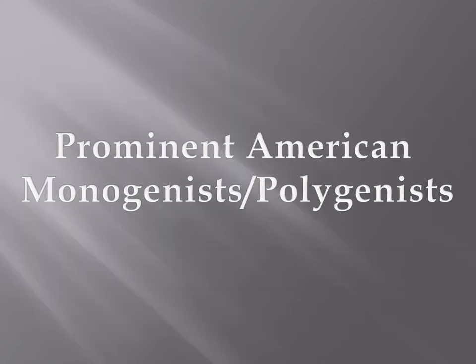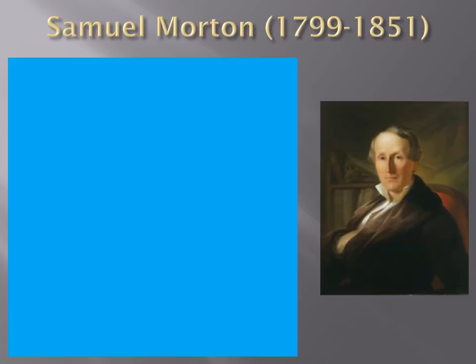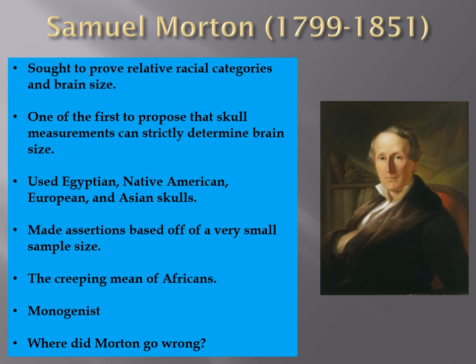Let's look at some prominent American monogenists versus polygenists. Samuel Morton, who lived from 1799 to 1851, sought to prove that relative racial categories exist based on brain size. He was one of the first to propose that skull measurements can strictly determine intelligence via brain size. He used Egyptian, Native American, European, Asian, and Caucasian skulls and made assertions based off of a very small sample size.